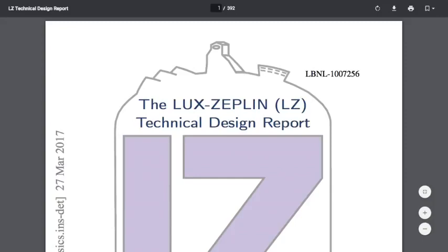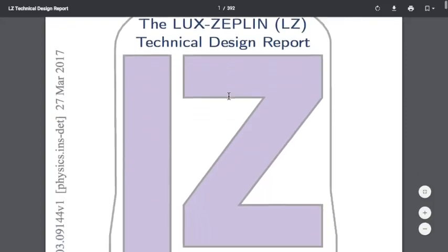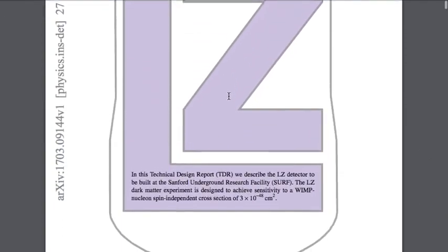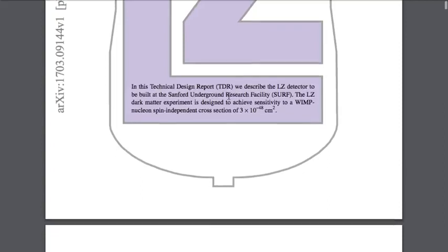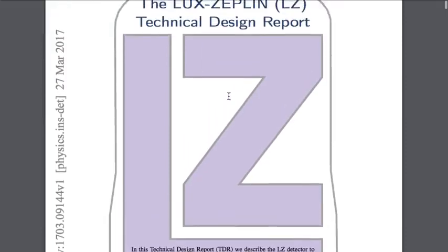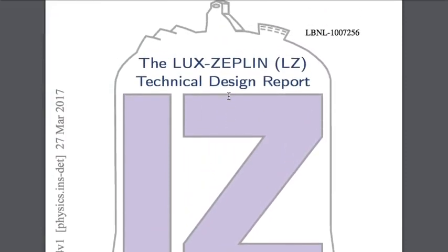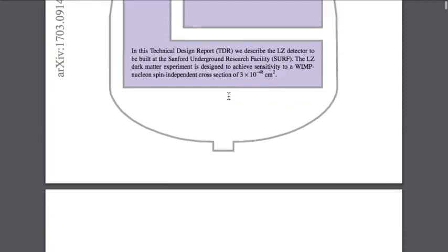Hello, today we're revisiting the Lux Zeppelin Project. The Lux Zeppelin Project is a deep underground research facility in the Black Hills of South Dakota that for some reason uses names that are used by Nazis — you know, Zeppelin.